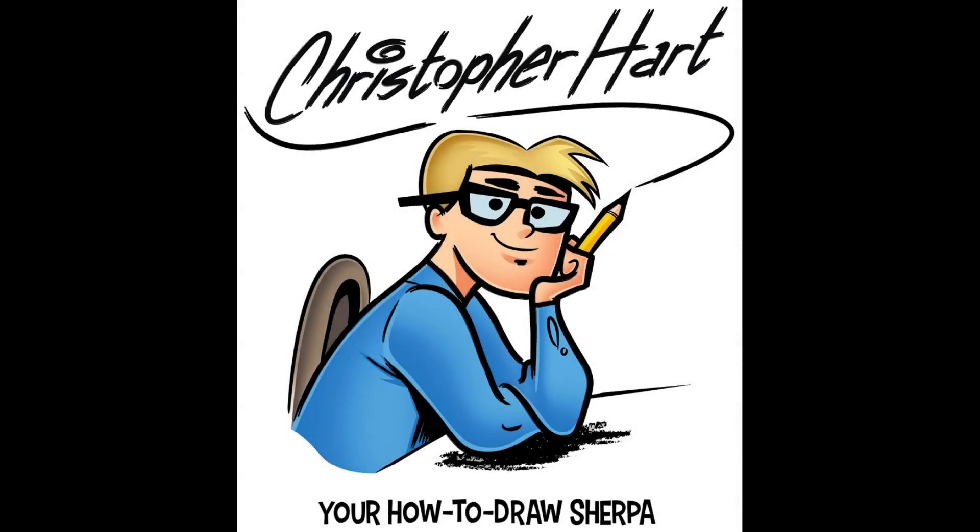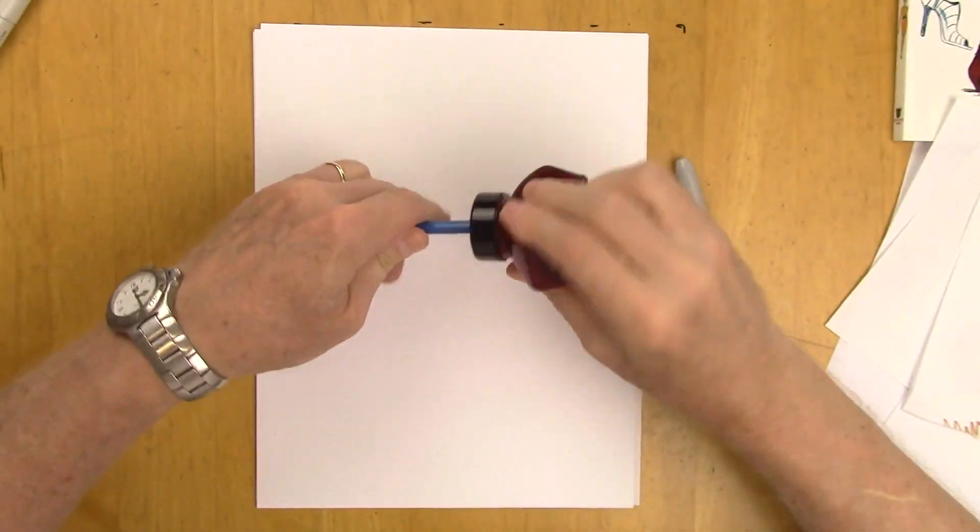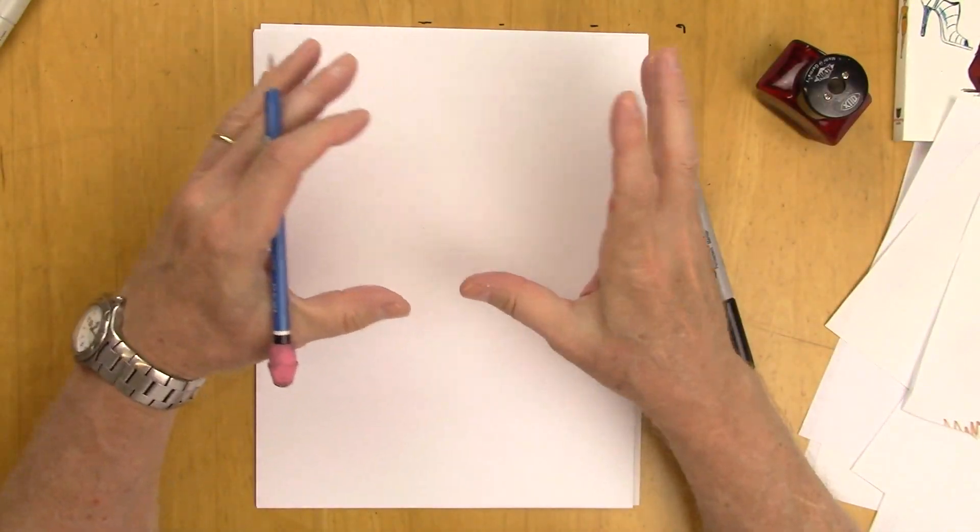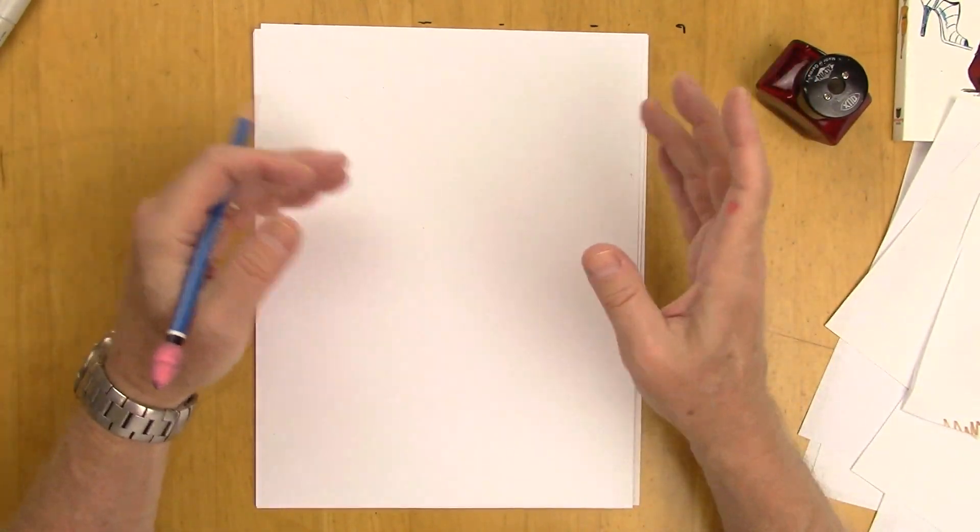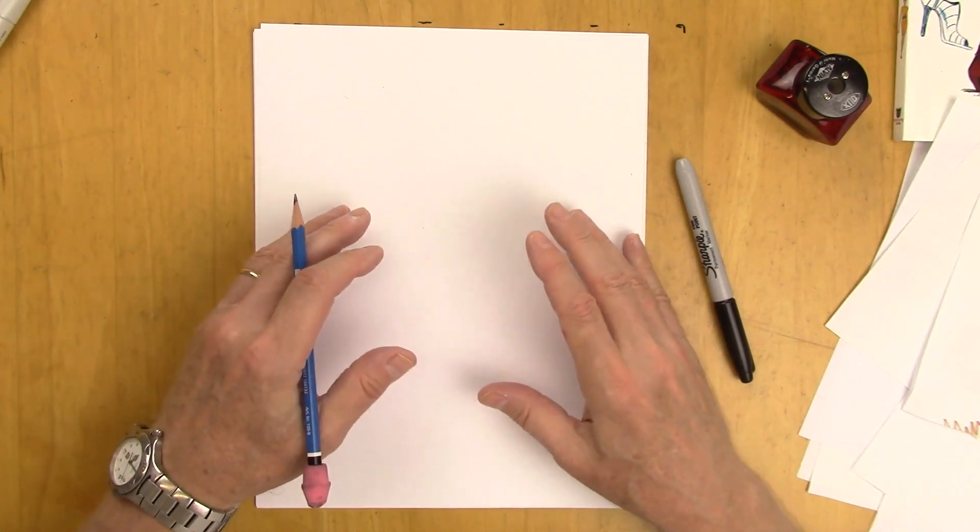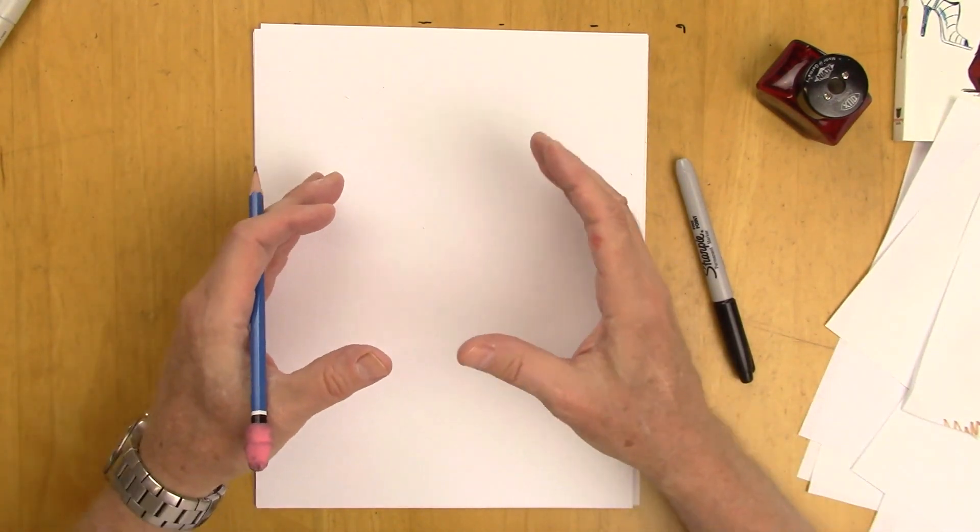Hi, my name is Christopher Hart. I'm a cartoonist and author of many books on drawing cartoons and manga and all sorts of fun stuff. And I love to give lessons on character designs. My favorite thing to do is design characters. So today I want to show you how we can design a character by shifting the planes and the curved parts of the head.